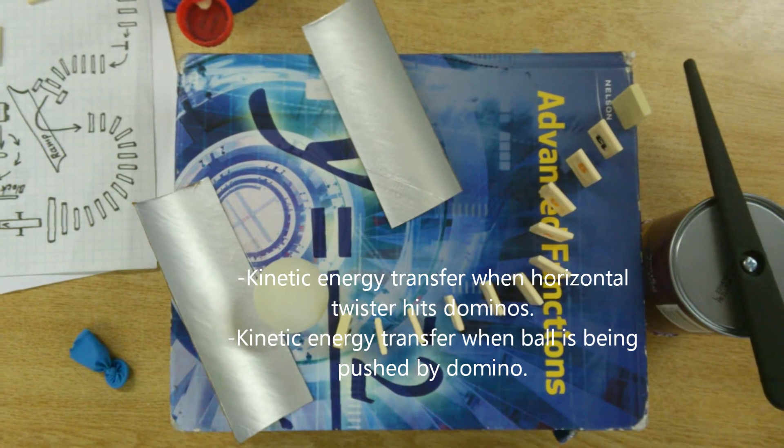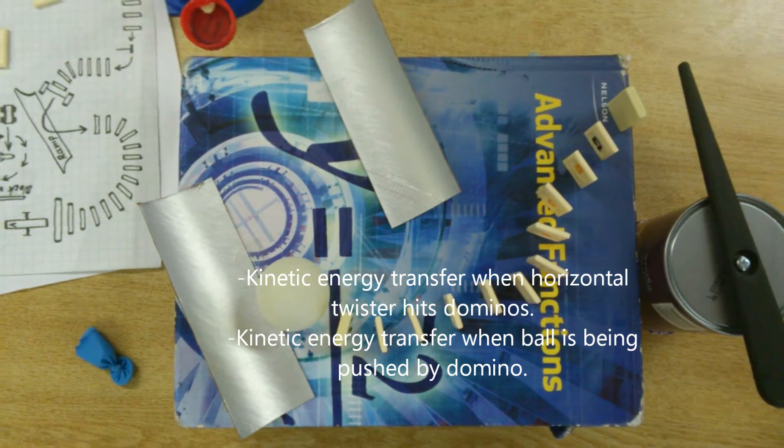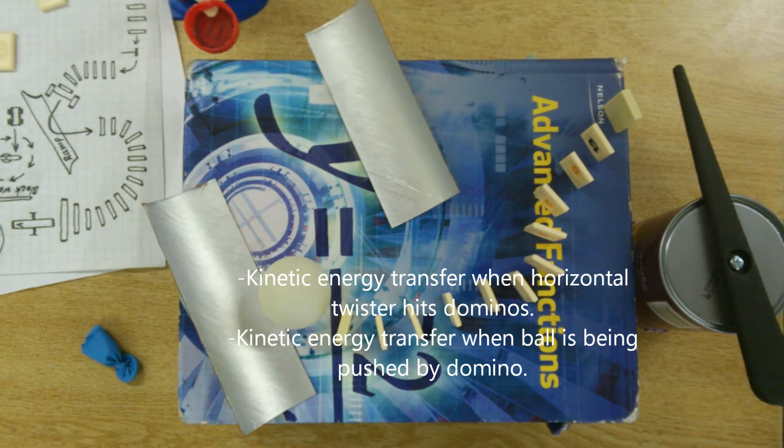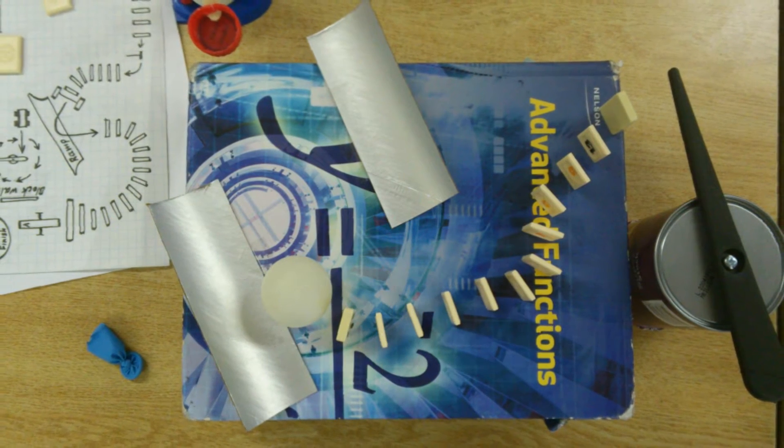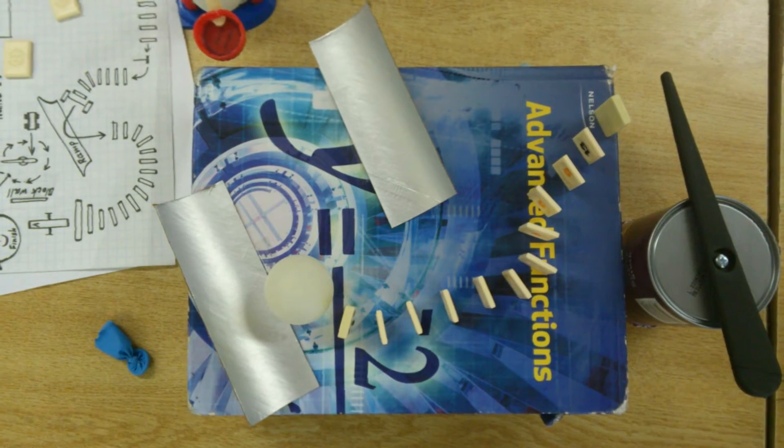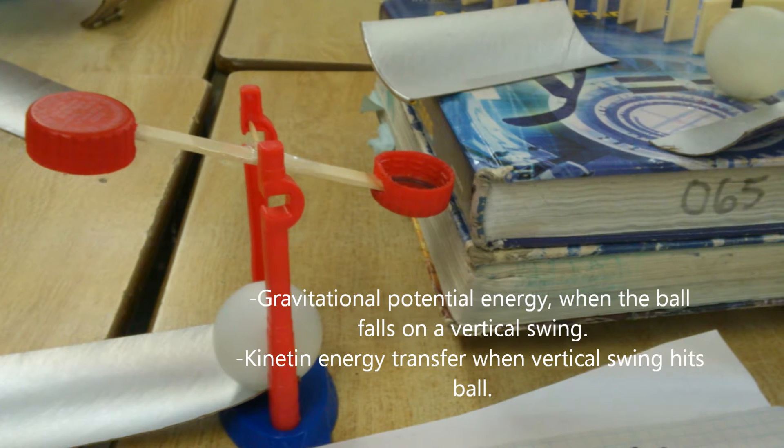Then the horizontal twister will hit another set of dominoes which will fall and hit a ping-pong ball. The ping-pong ball will roll and fall off the books onto a vertical swing with gravitational potential energy.